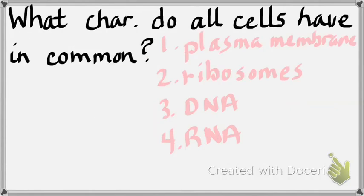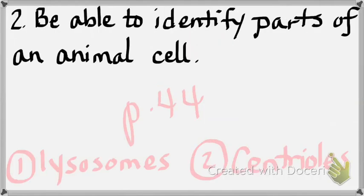Question two: be able to recognize structures and list functions of animal cell structures. Cheek cells were animal cells. Two things a typical animal cell would have and a typical plant cell would not: lysosomes and centrioles. Page 44 covers this — things I love show up on tests.